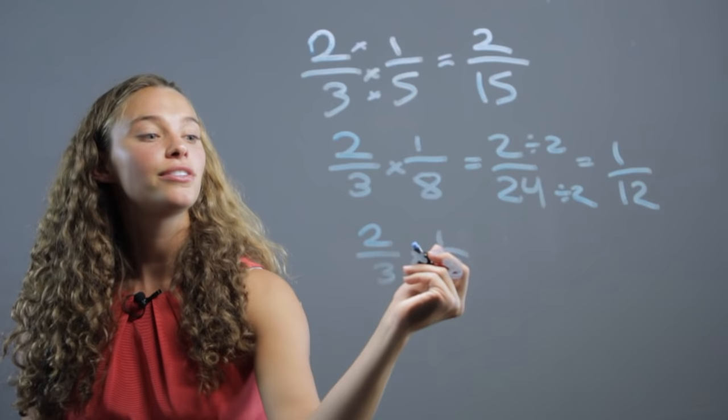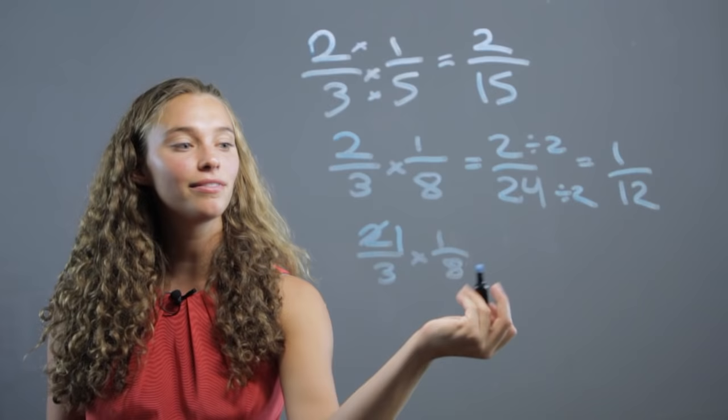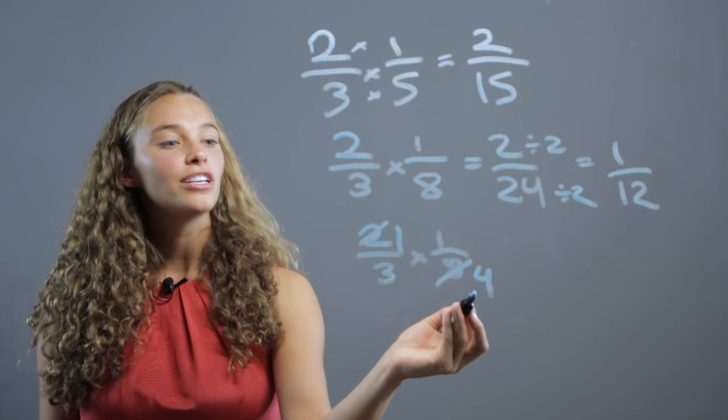So, 2 and 8 both share the common factor of 2. So, we can take 2 from both of them, divide them both by 2, and we get 2 divided by 2 is 1. I just like to cross it off. 8 divided by 2 is 4.